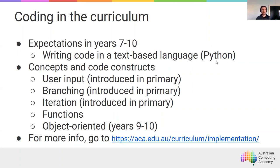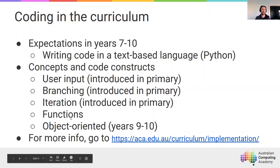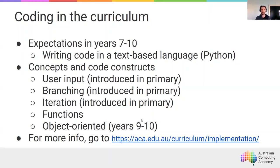The ideas covered in secondary are also some of the same ideas covered in primary: user input, which is interacting with a program after it's been written; branching, where students write their own if statements in a text-based language; and iteration, which is an understanding of looping. The things newly introduced in secondary are the concept of functions and object-oriented programming, which is only in years 9 and 10.